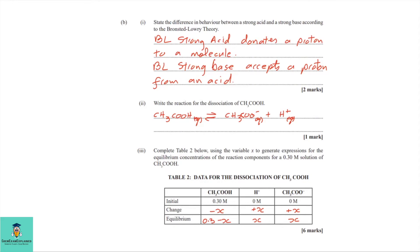2B part two: write the reaction for the dissociation of CH3COOH, which is ethanoic acid. Ethanoic acid dissociates to form the ethanoate ion (CH3COO⁻) and a proton (H⁺).